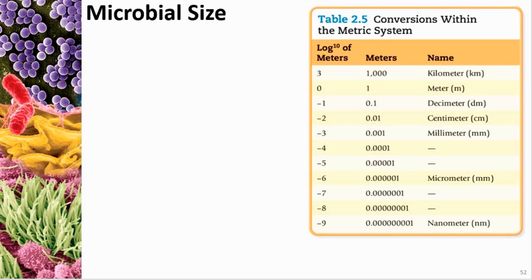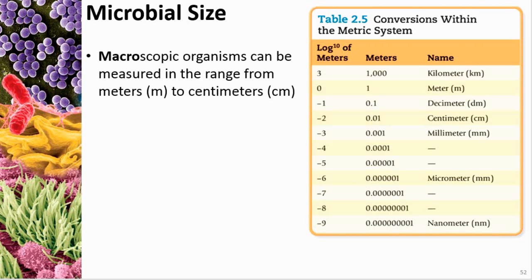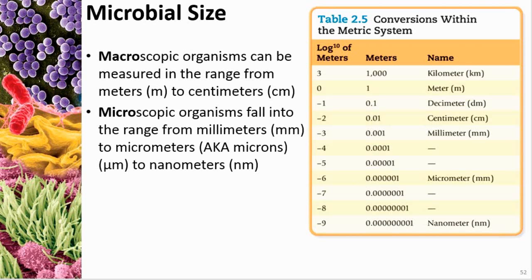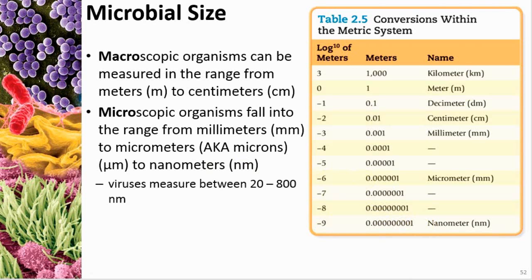A table in the book gives a breakdown of sizes. In science we use the metric system. If something is macroscopic, it can be seen with the naked eye. Microscopic things range from millimeters to micrometers — a micrometer, also called a micron, is one millionth of a meter (1×10⁻⁶ m). Nanometers are one billionth of a meter. Viruses are between 20 and 800 nanometers and can't be seen with a light microscope. The smallest bacteria is about 200 nanometers.